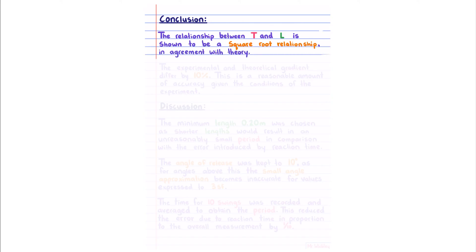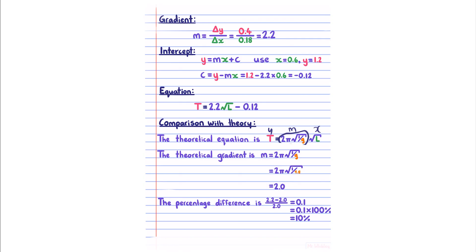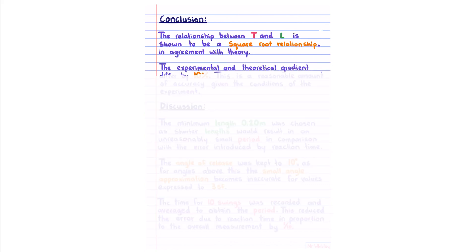We now have everything to write our conclusion. The relationship between t and l is shown to be a square root relationship, which is in agreement with theory. We would know that theoretically it should be a square root relationship, because we would have been given this equation. The experimental and theoretical gradient differ by 10%. This is a reasonable amount of accuracy given the conditions of the experiment.